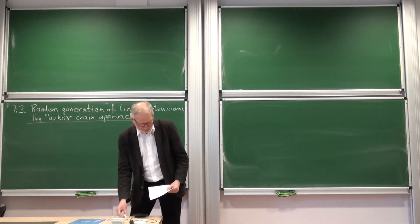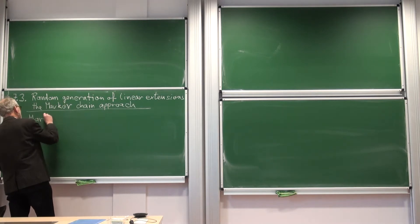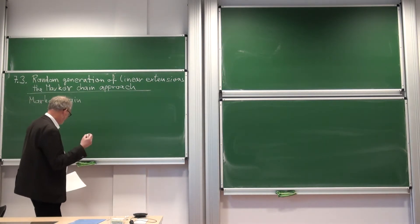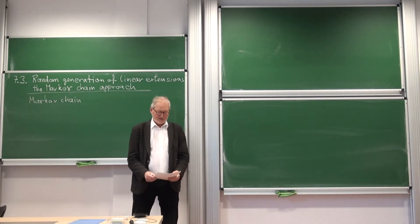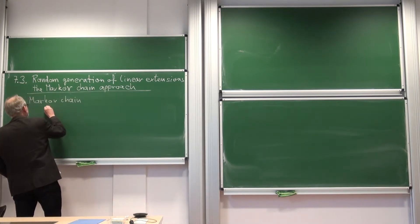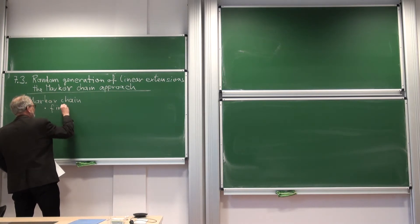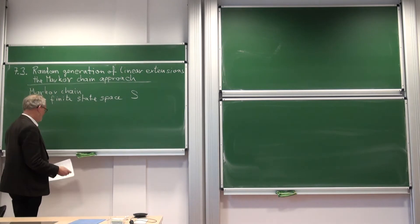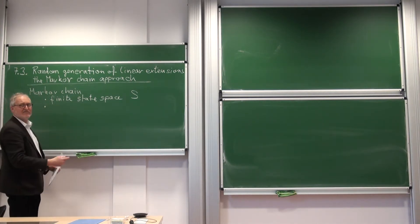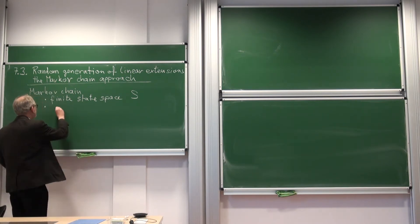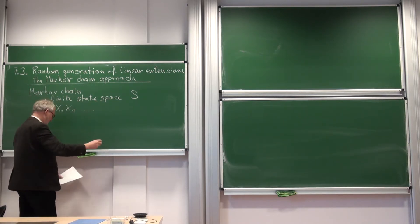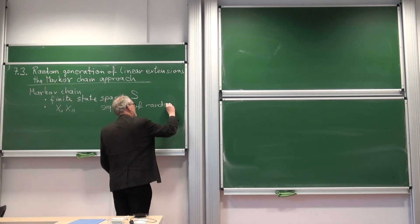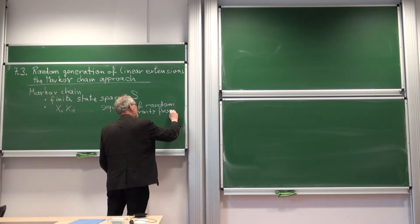What is a Markov chain? A Markov chain is a stochastic process which is memoryless, discrete time, and discrete space. For our purposes, the best case is to have a finite state space — let's call it S. The Markov chain itself will be realized as a sequence of random events from this space.